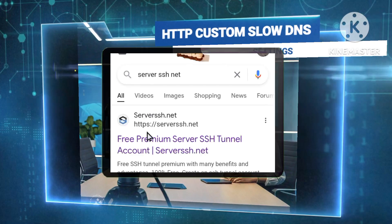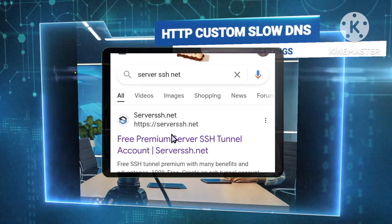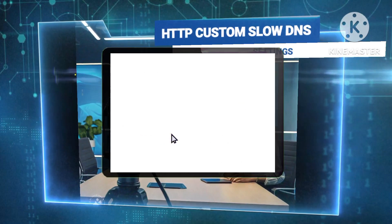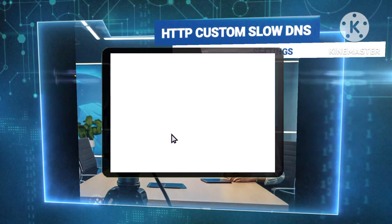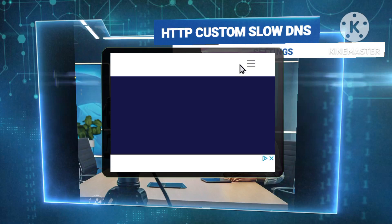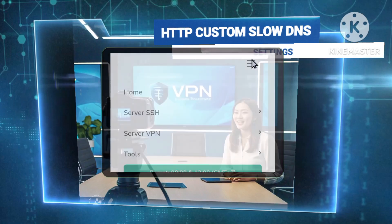Step 2: Exploring the website. Once you're on the website, look for the three lines button, usually located in the top corner, and tap on it to access the menu.